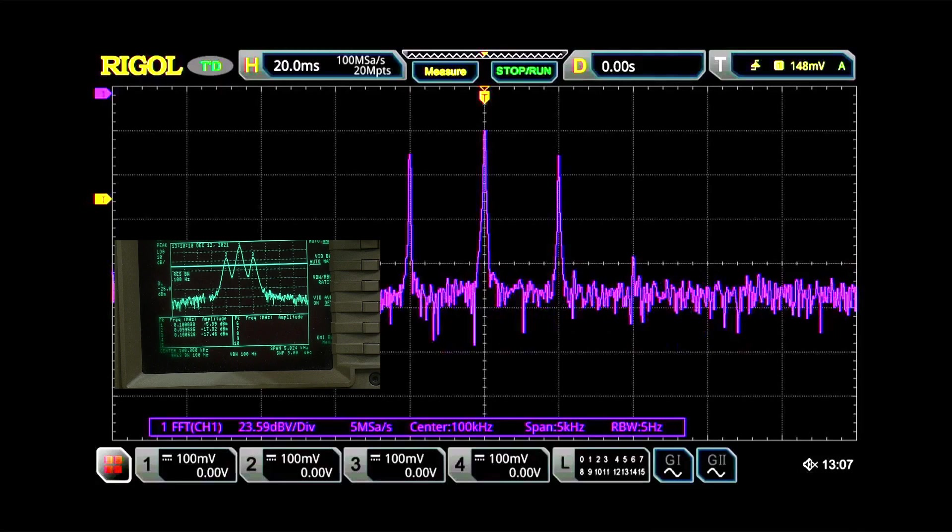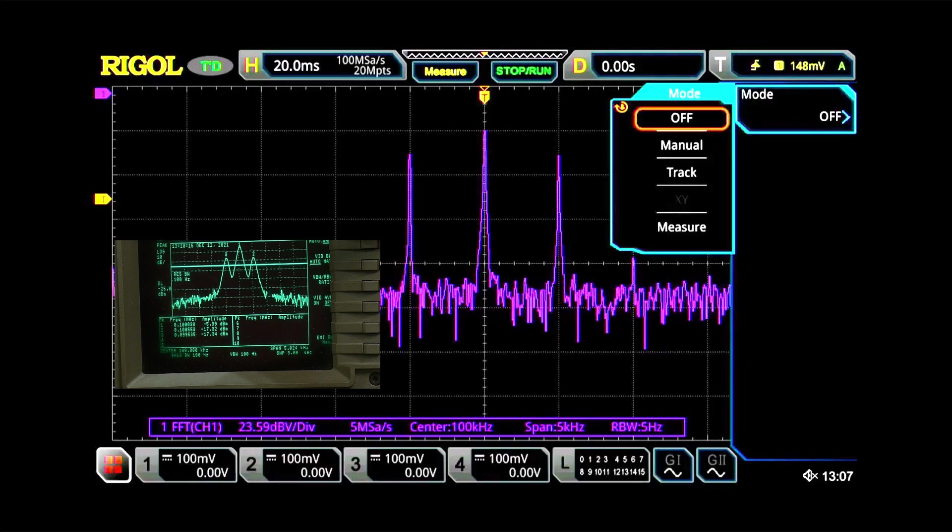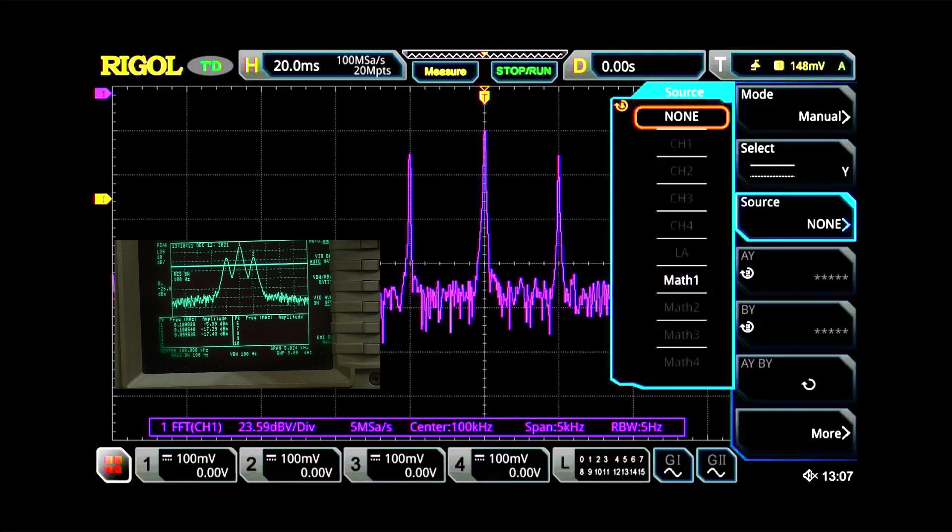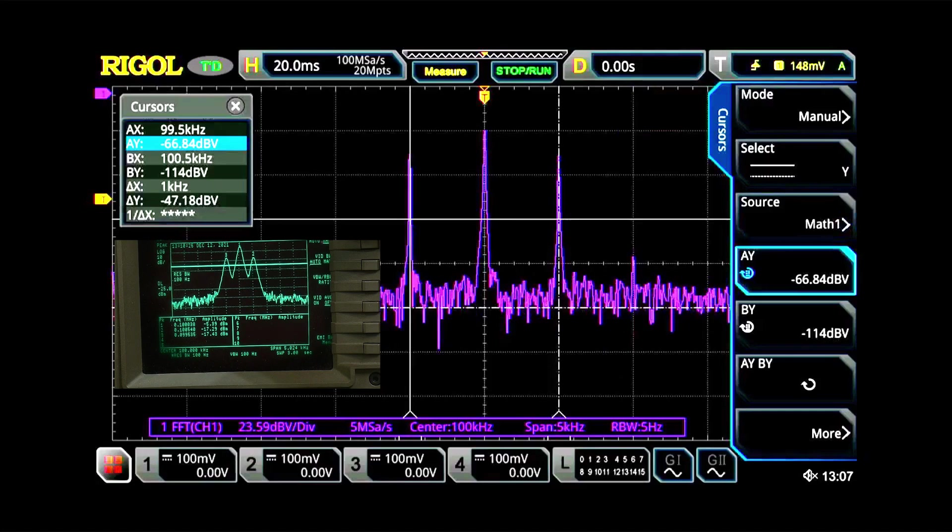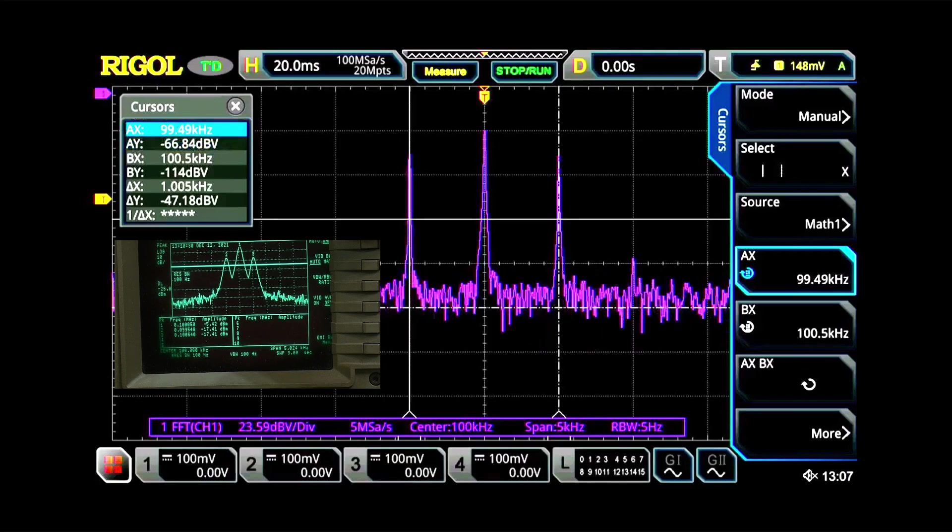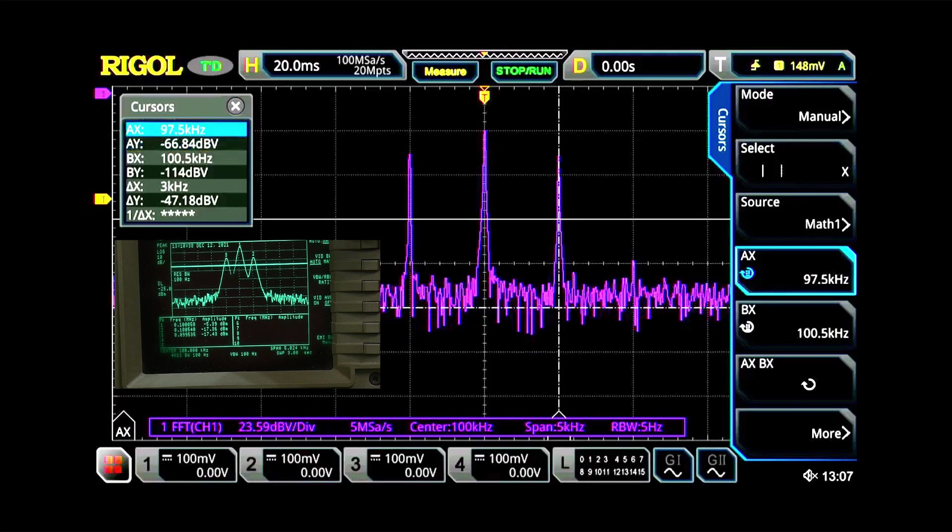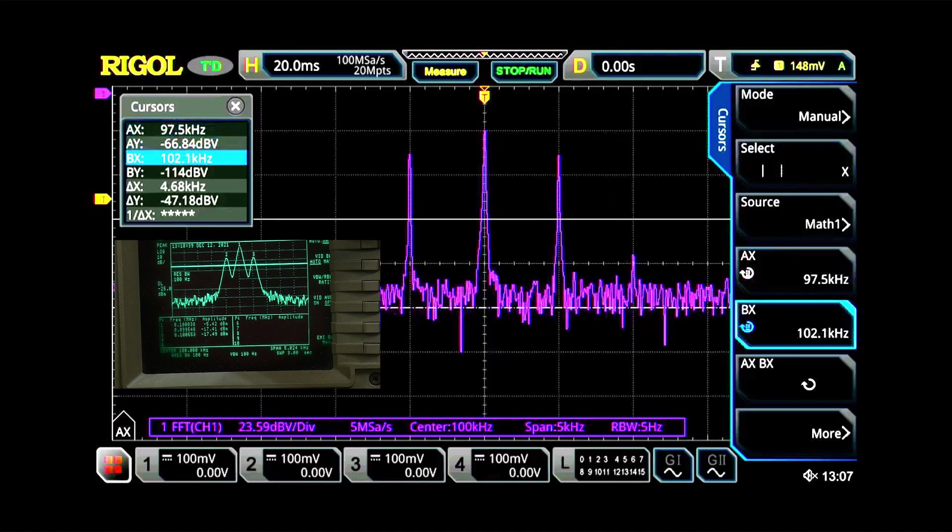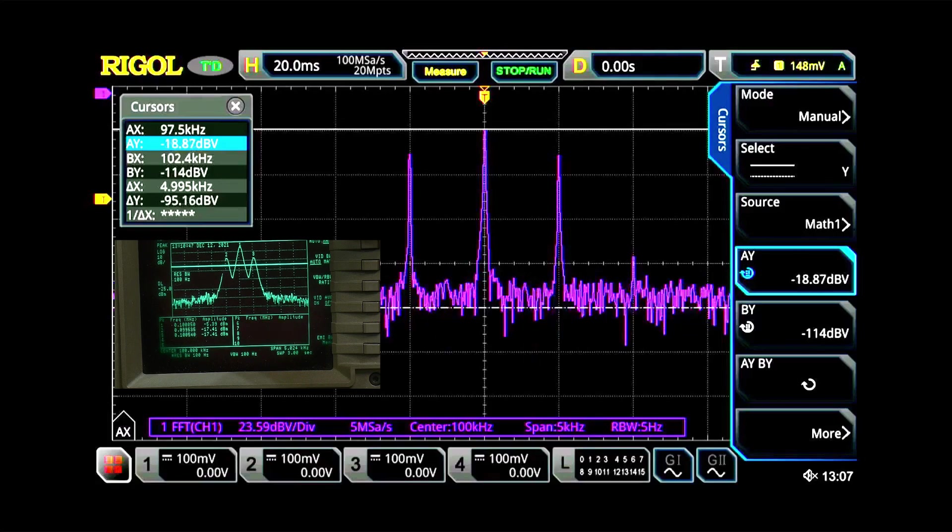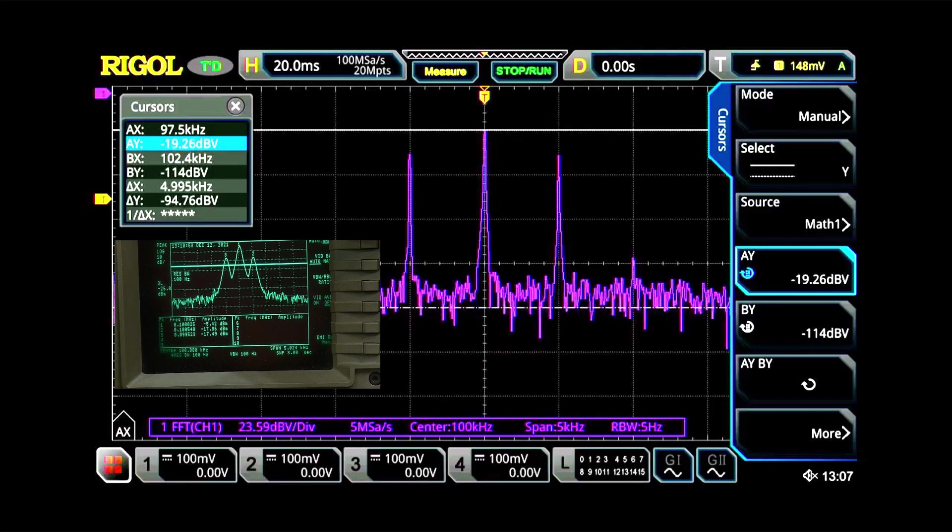On the Rigol scope we can hit cursor and we can turn the cursor on and we can go to manual and we can select the source as math. And now we get some cursors. We can set the X. We can move things out of the way because we don't care about X. So let's just move the X's out of the way. And then we'll do Y's and we can move the Y up until we're reading that peak, that peak reading there. So about there. So it's measuring minus 19.26 dB volts.